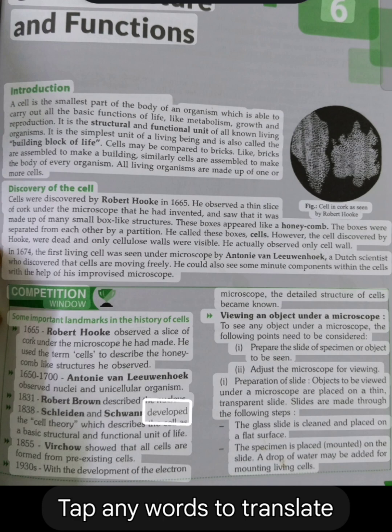1838, Schleiden and Schwann developed the cell theory, which describes the cell as a basic structural and functional unit of life. 1855, Virchow showed that all cells are formed from pre-existing cells. 1930s, with the development of the electron microscope, the detailed structure of cells became known.